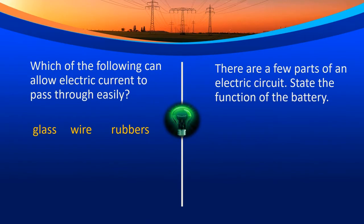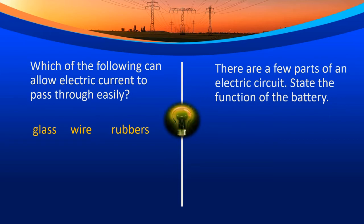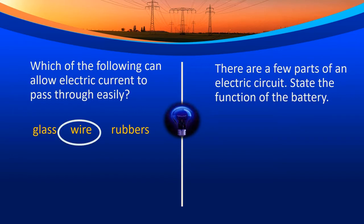Which of the following can allow electric current to pass through easily? Is it the glass, wire, or rubber? The wire. Very good.